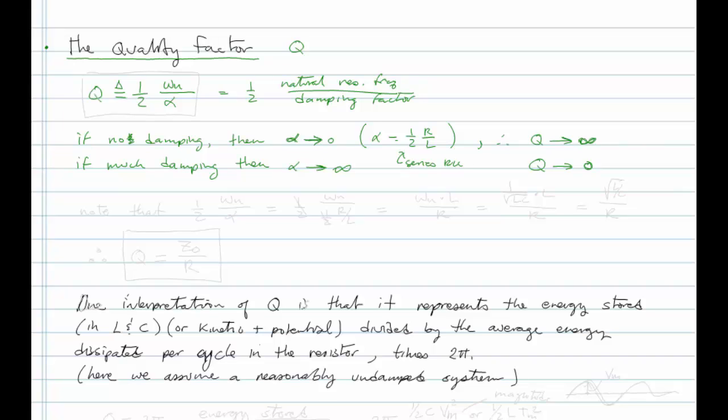This is similar to a spring and a mass. If we want something that just keeps going and going, we'd want a high quality factor. You can talk about a pendulum clock as having a quality factor, and so forth.